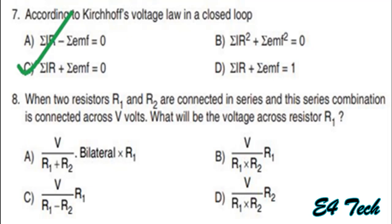Next: when two resistors R1 and R2 are connected in series and this series combination is connected across V volts, what will be the voltage across resistor R1? The voltage across R1 = R1 divided by (R1 + R2) into source voltage V. That is option A.